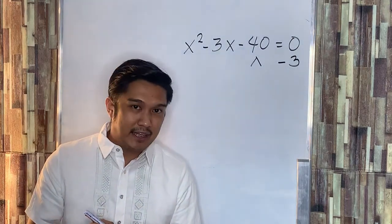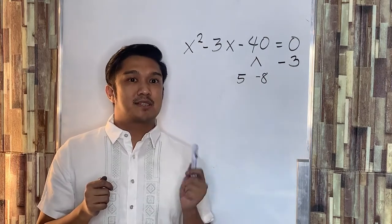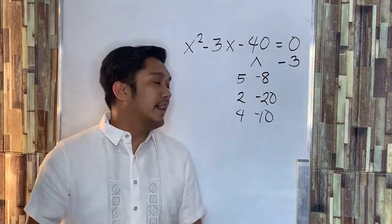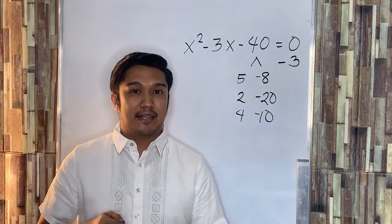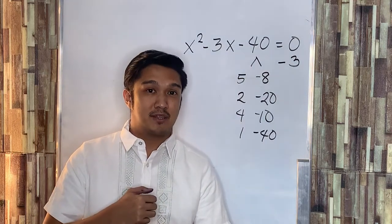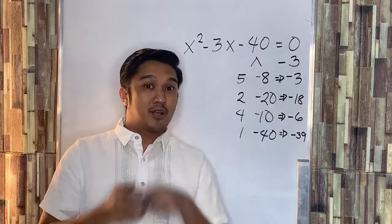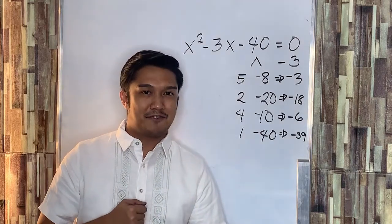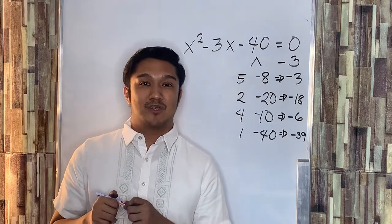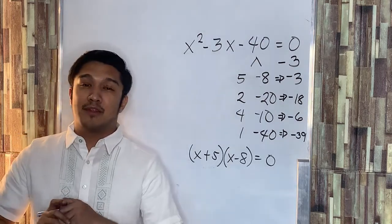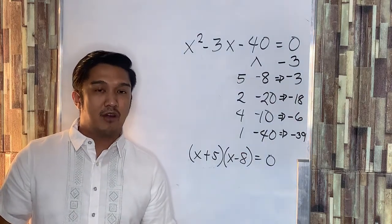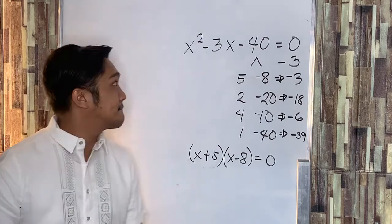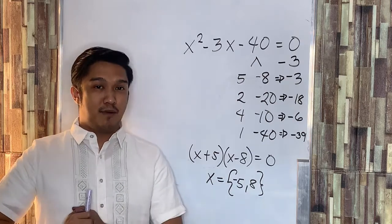Now, let's have the factors of negative 4. We have 1 and negative 4, and also 2 and negative 2. Adding the two numbers, we will consider the pair whose sum equals negative 3. The factors that satisfy this are 1 and negative 4, since their sum is negative 3. Therefore, the factored form of the given quadratic equation is x plus 1 times x minus 4 equal to 0, and the solution set is negative 1 and positive 4.